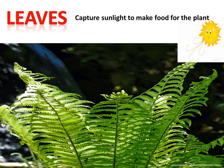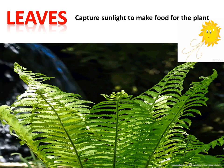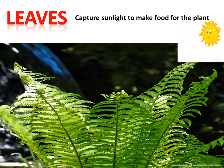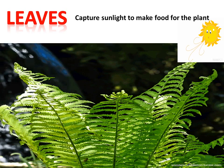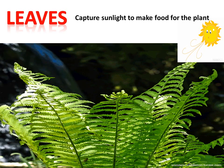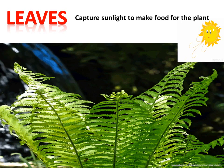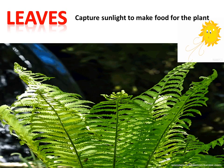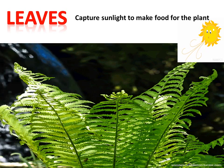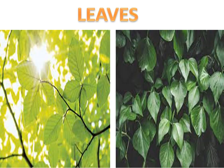This process is called photosynthesis. Sunlight is very necessary — without sunlight, plants or leaves cannot make food. Leaves have different sizes and different colors.